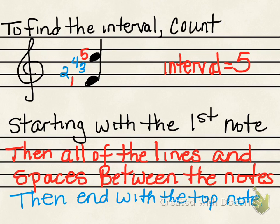Then you count all the lines and spaces in between — this line, this space, this line — so that's where we get two, three, and four. The top note ends our interval, and whichever number we land on when we reach the top note, that is the name of our interval. In this case, the interval is five.